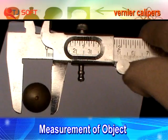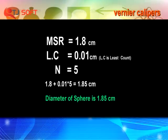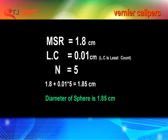Now by using the formula — measurement of object equals MSR plus L.C. into N — we can find the diameter of the sphere. Repeat the steps two more times by changing the directions of the sphere to get the exact true diameter.